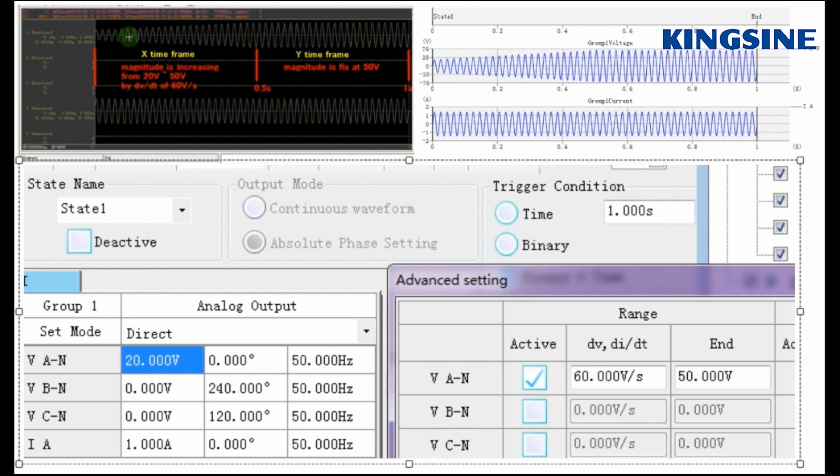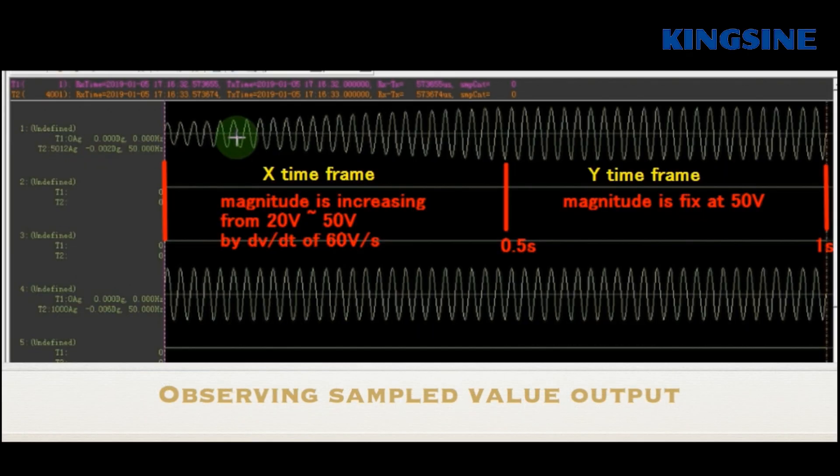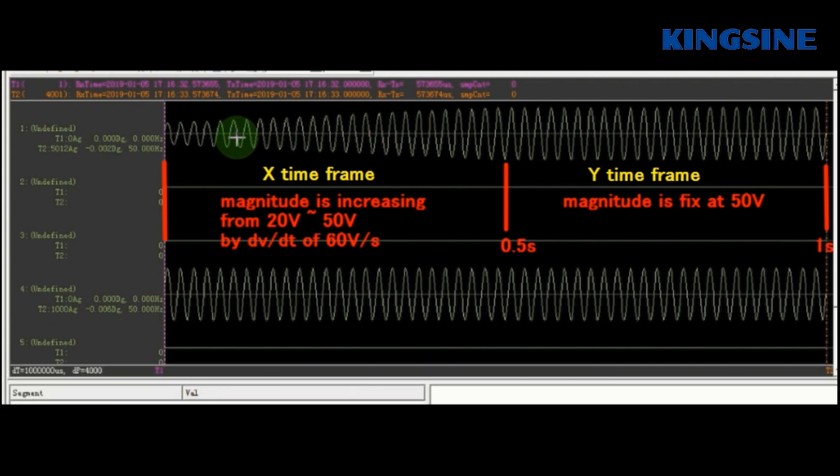Now, if we observe the sampling value output in frame view, we will note that magnitude of voltage signal is increasing from 20V to 36V in 0.5 seconds, with DV by DT of 16V per second. Our test time is one second. Hence, the 36V constant signal is generated for next 0.5 seconds. It is clearly visible in frame view.